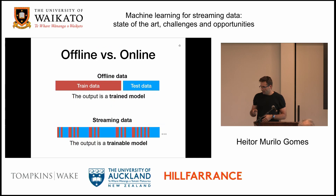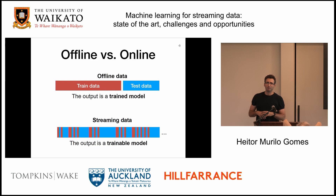If I were to summarize: if I'm creating a model for batch data or static data, the output is a trained model — a function that we can deploy in production, very common nowadays, though it's still challenging. If we are deploying a model for streaming data, then we have this learnable model, something that is running continuously in production, which adds much more complexity to the deployment phase.